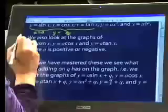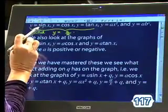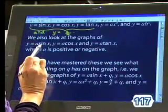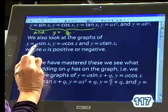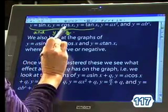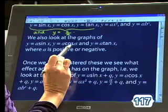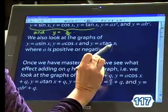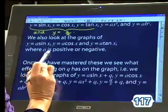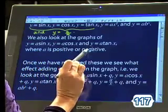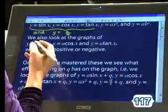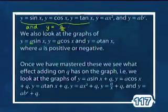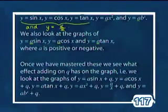Once we've had a look at that, we're also going to have a look at the graphs — this one was sin x. Then we're going to look at what effect the a has if it multiplies by sin x. What happens if we put an a in front of cos x and an a in front of tan x? It qualifies here that a can be any positive or negative number, and this a in front of each of these is actually working just as a multiplier.